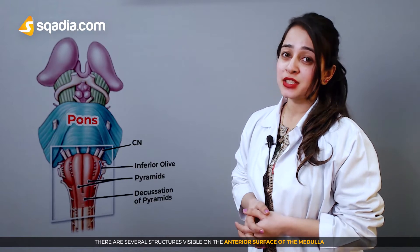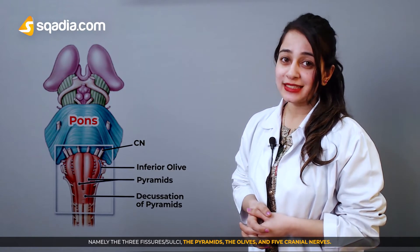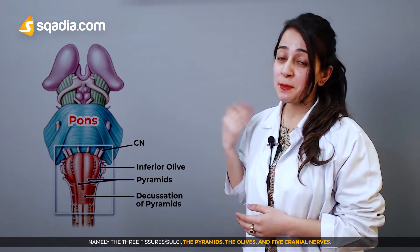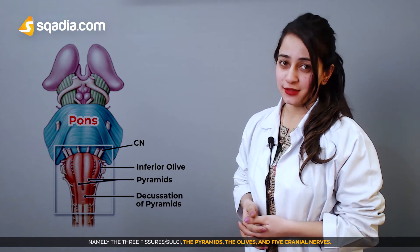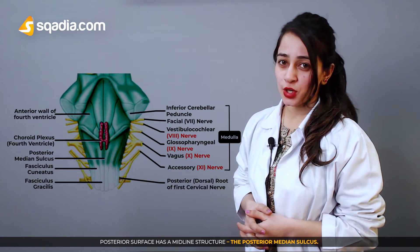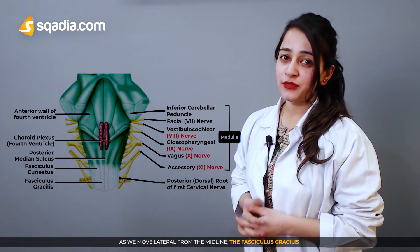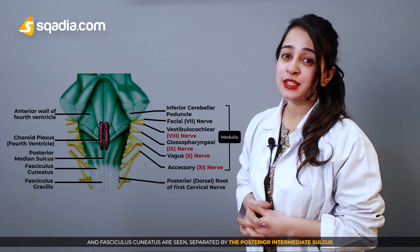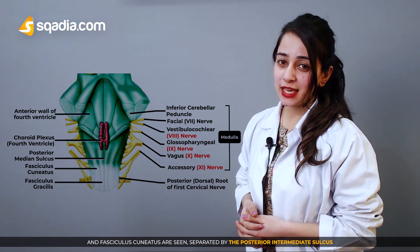There are several structures visible on the anterior surface of the medulla, namely three fissures or sulci, which include the pyramids, the olives, and five cranial nerves. The posterior surface has a midline structure called the posterior median sulcus. Moving lateral from the midline, the fasciculus gracilis and fasciculus cuneatus are seen, separated by the posterior intermediate sulcus.